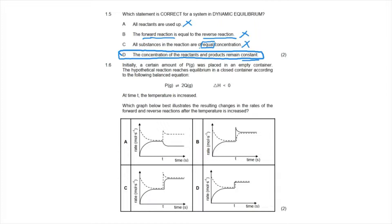Question 1.6: a certain amount of P was placed in an empty closed container and the hypothetical reaction reaches equilibrium. The forward reaction has a negative enthalpy change, meaning it is exothermic. At time T, the temperature is increased. All graphs start the same way — the forward reaction (dotted line) starts at a high rate and decreases until both the forward and reverse rates are constant at equilibrium.